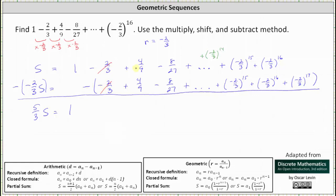Next we have 4/9 minus 4/9, which is zero. Next we have negative 8/27 minus negative 8/27, which is zero. As we keep going, the 15th power of negative 2/3 minus the 15th power of negative 2/3 is zero. And the 16th power of negative 2/3 minus the 16th power of negative 2/3 is also zero.